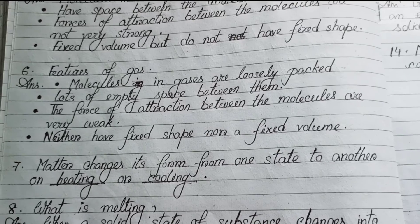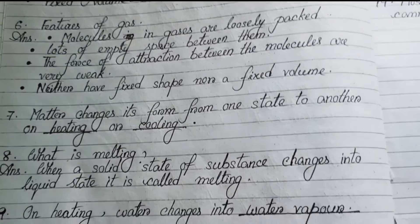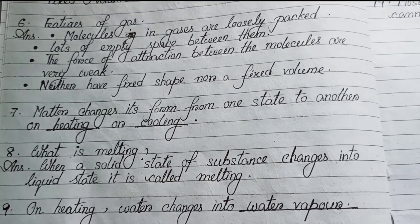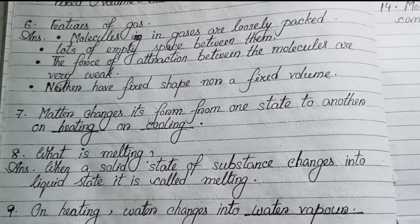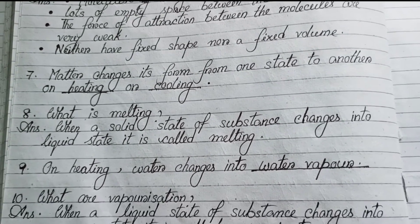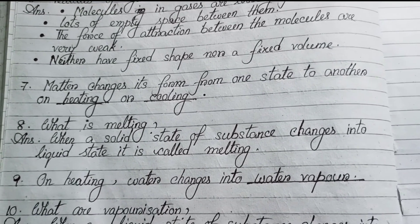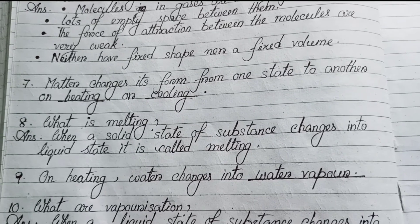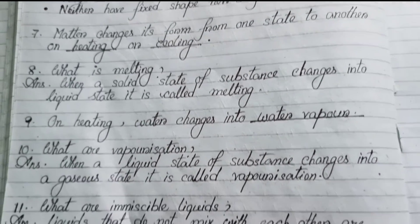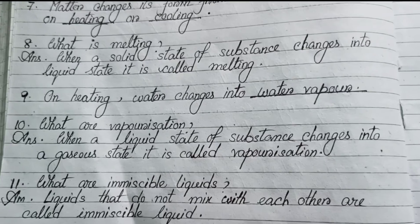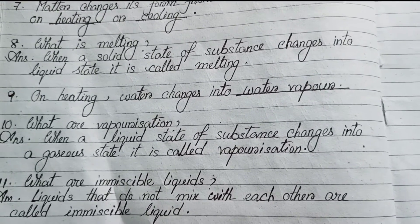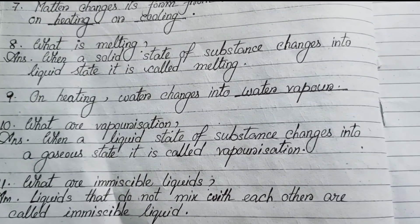Number 8: What is melting? When a solid state of a substance changes into liquid state, it is called melting. Number 9: Fill in the blank — on heating, water changes into water vapor. Number 10: What is vaporization? When a liquid state of a substance changes into a gaseous state, it is called vaporization.